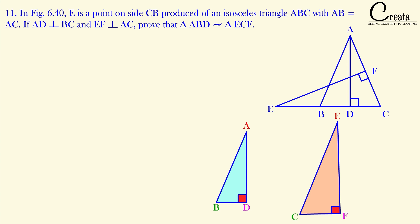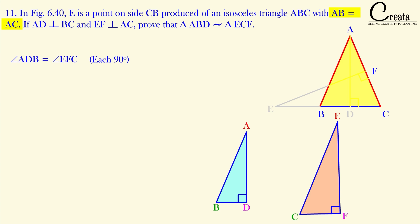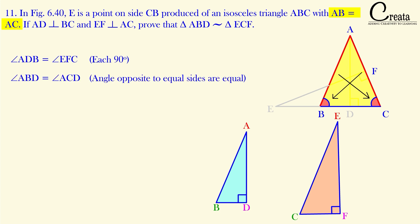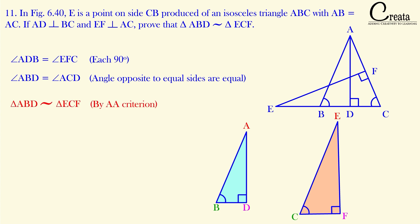Here angle D and angle F are both 90 degrees since they are perpendicular to their respective sides — so both angles are equal to each other. That gives us one pair of equal angles. Further, since triangle ABC is isosceles with AB equal to AC, the angles opposite to equal sides are equal: angle B and angle C are equal to each other. So we have two angles of the triangles equal, and therefore triangle ABD is similar to triangle ECF by angle-angle criteria. That is the answer.